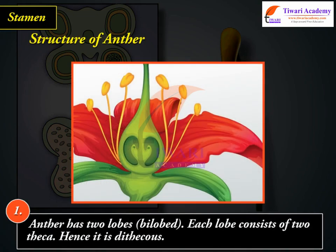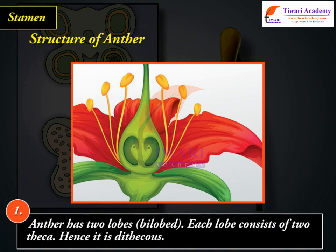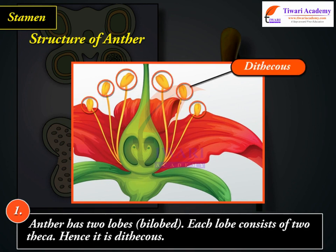Structure of Anther: 1. Anther has two lobes — it is bilobed. Each lobe consists of two theca; hence it is dithecous.